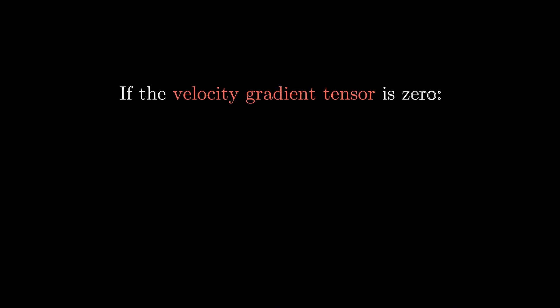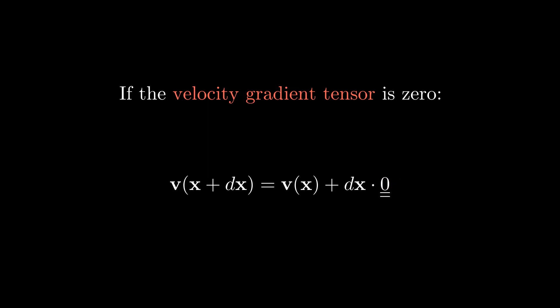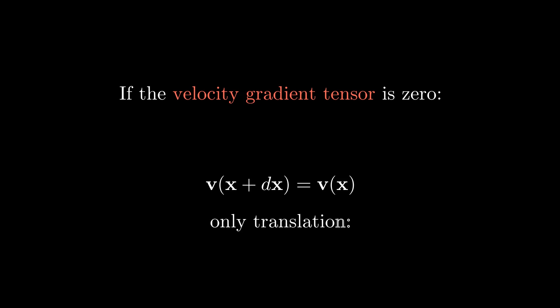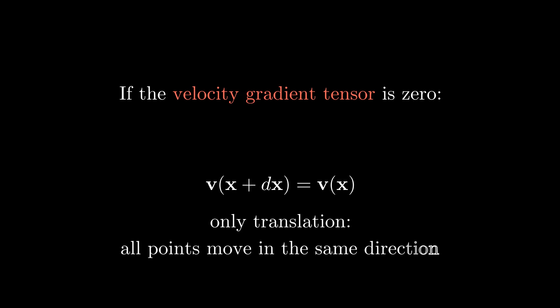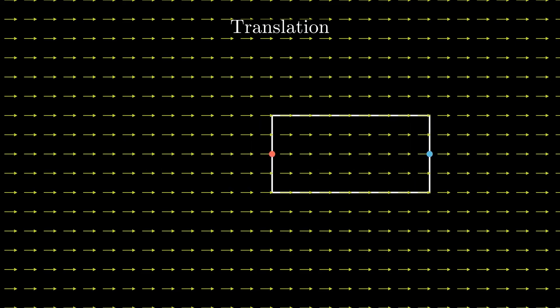Let's look at the case when the entire velocity gradient tensor is zero. Then the velocity at both points is the same — there is only translation, and all points move in the same direction with the same speed. When we place our rectangle in a vector field where the velocity gradient is zero, we only see translation: both the left point and the right point move at the same speed in the same direction.